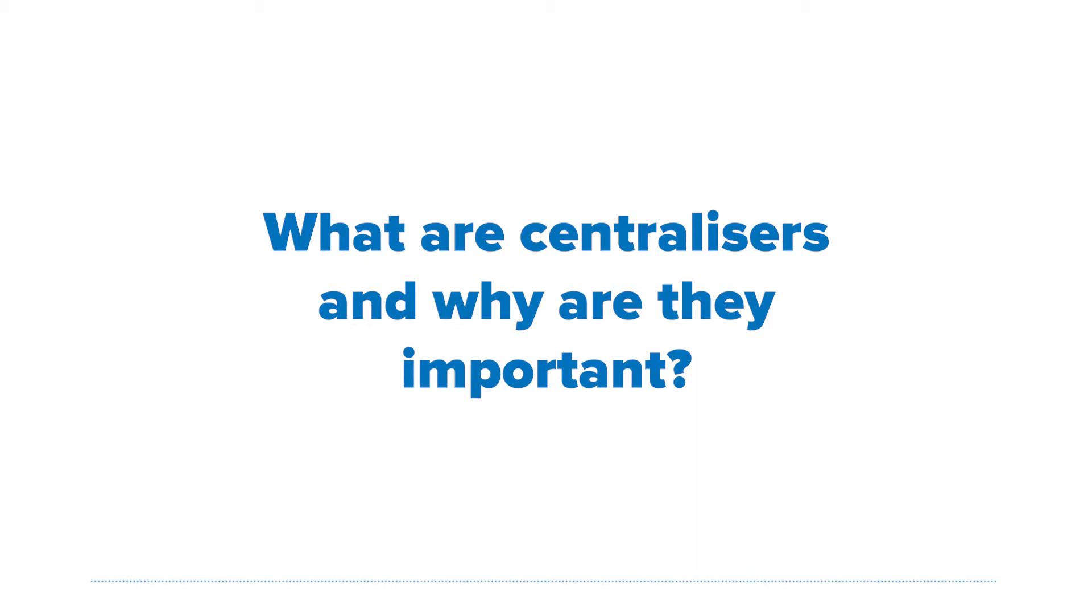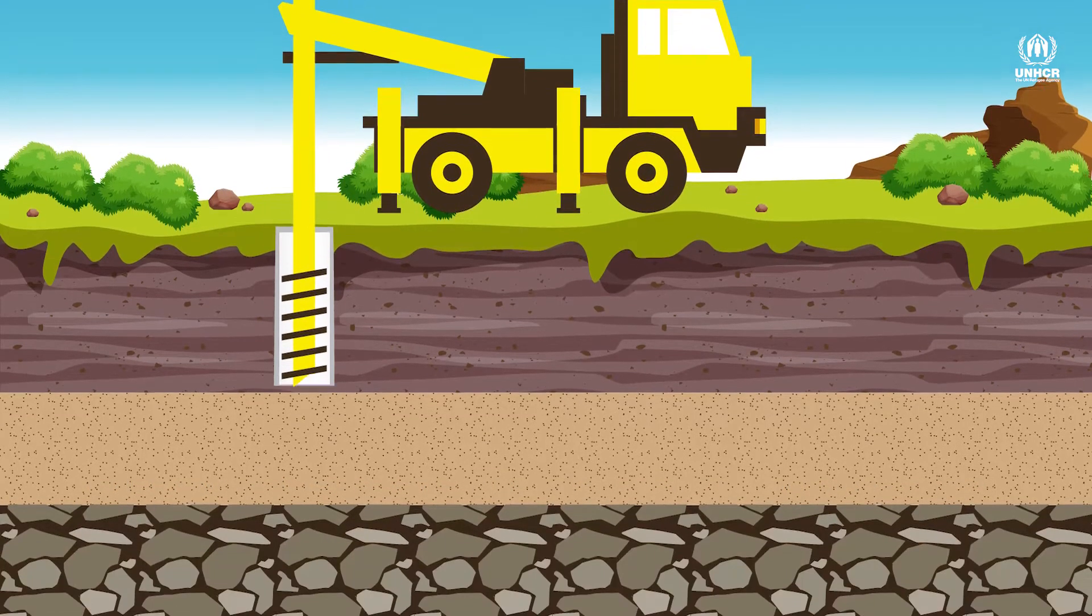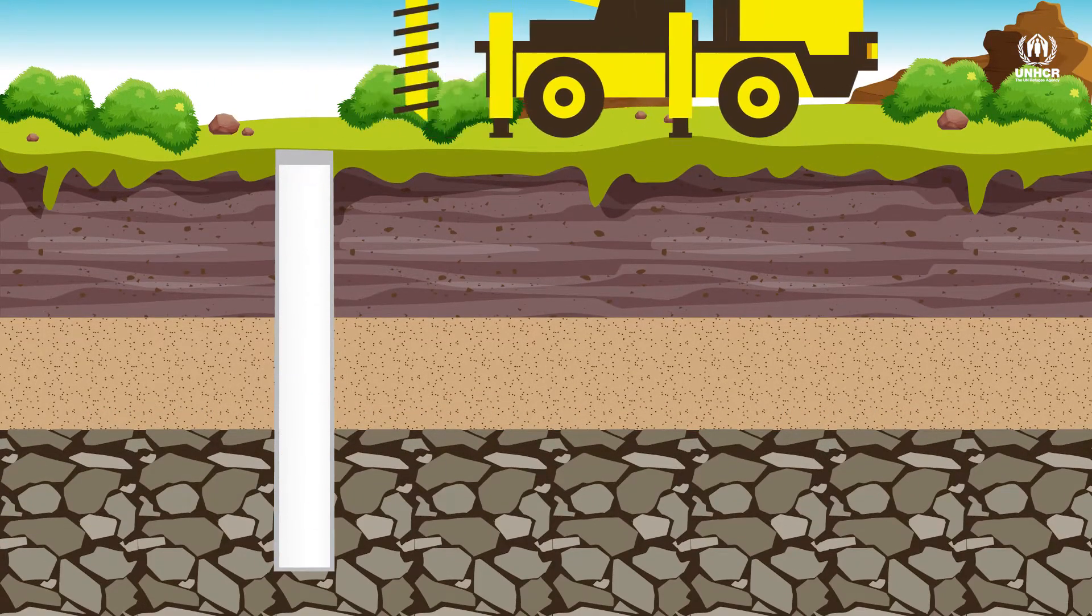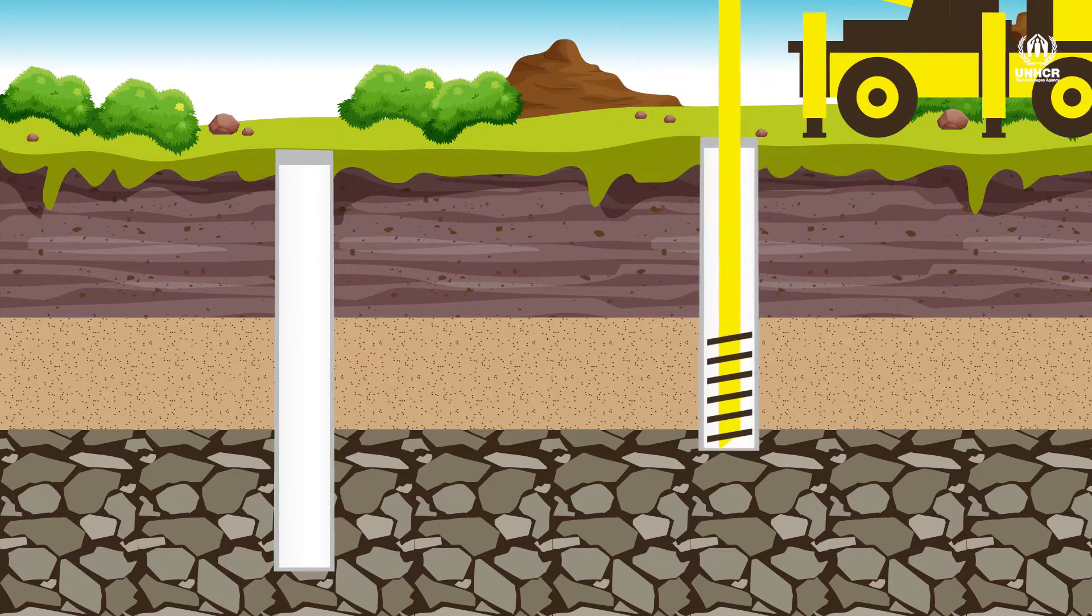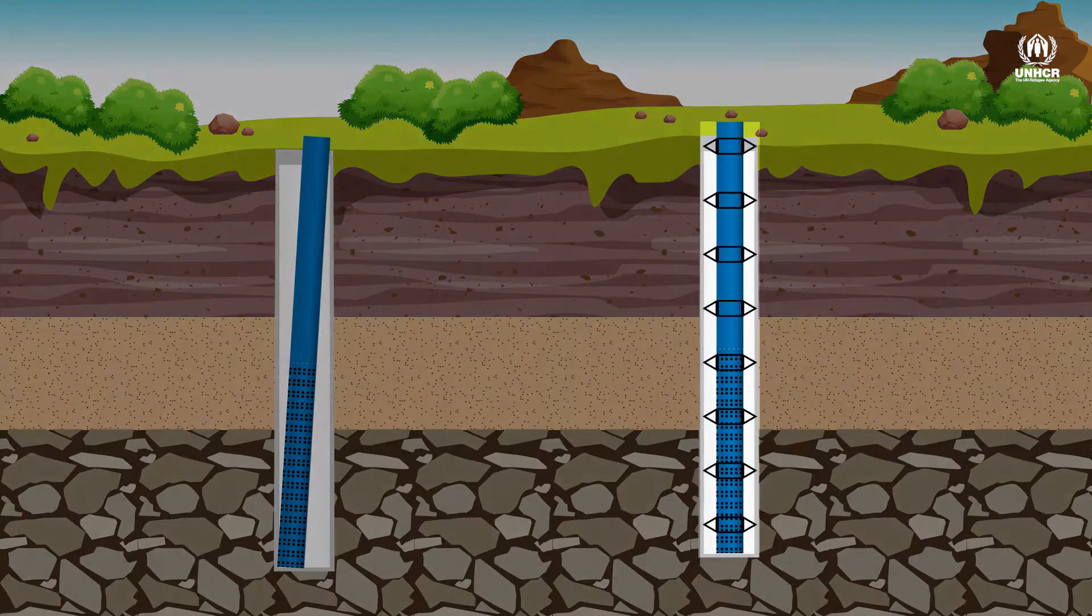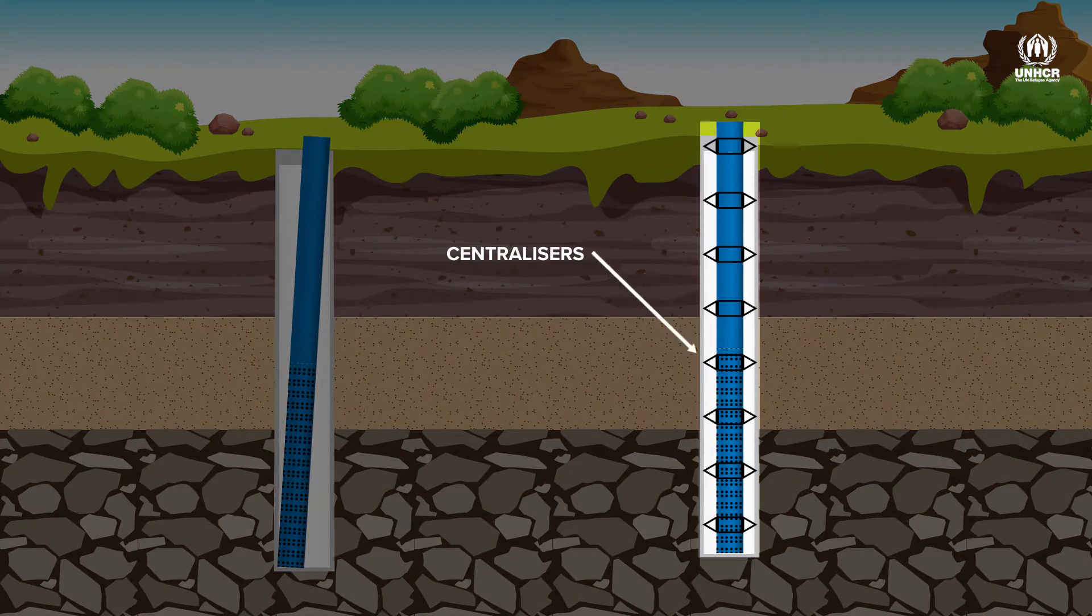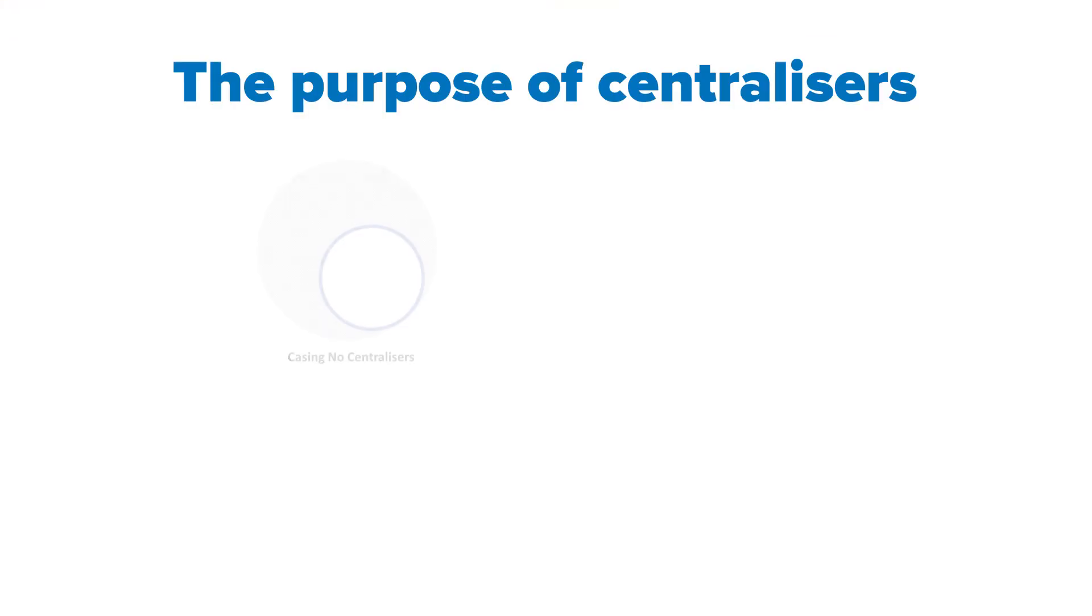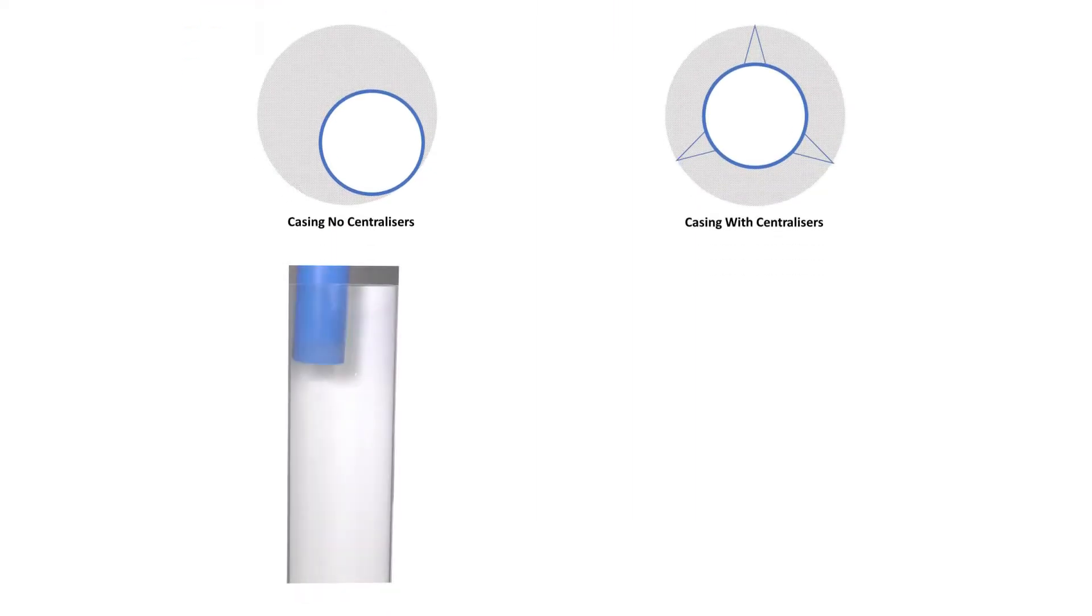Yeah, sure. Thanks for asking. I think I can help you. Basically, centralisers are used in drilled boreholes to make sure that the casing sits centrally away from touching the walls. There are many types available, but they all serve this same purpose of creating a regular space between the casing and the borehole walls.